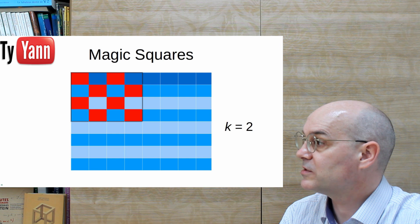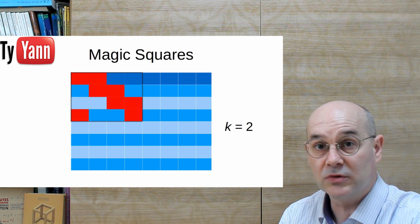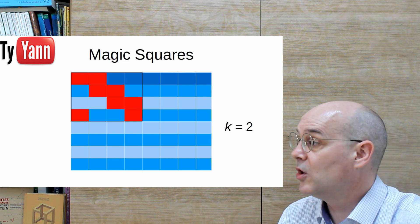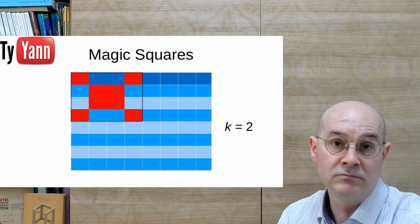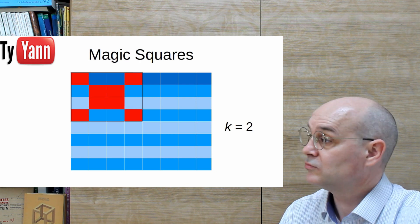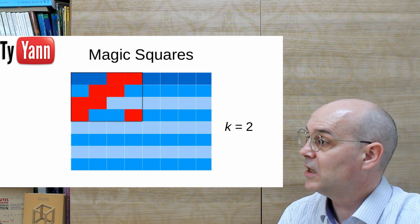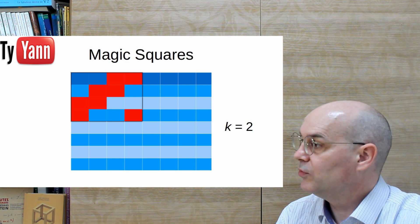We can do other patterns, like this one, which is interesting too. You can check, two red squares in each line and each column. Or maybe we can do something like that, which is nice too. Another one. And you know what? We're gonna go with this one. So, we do this one.